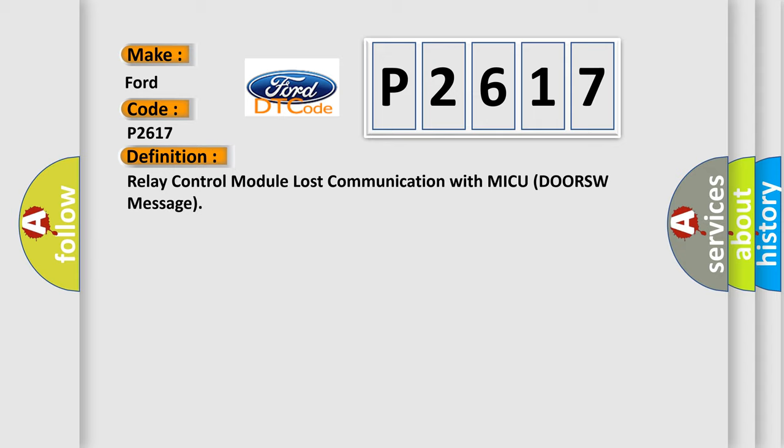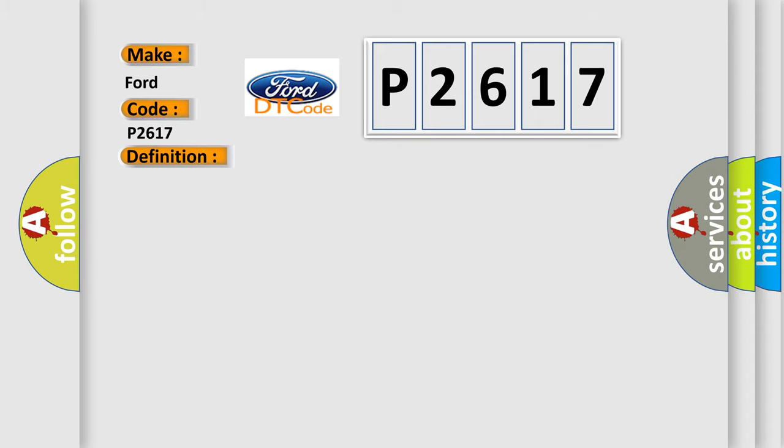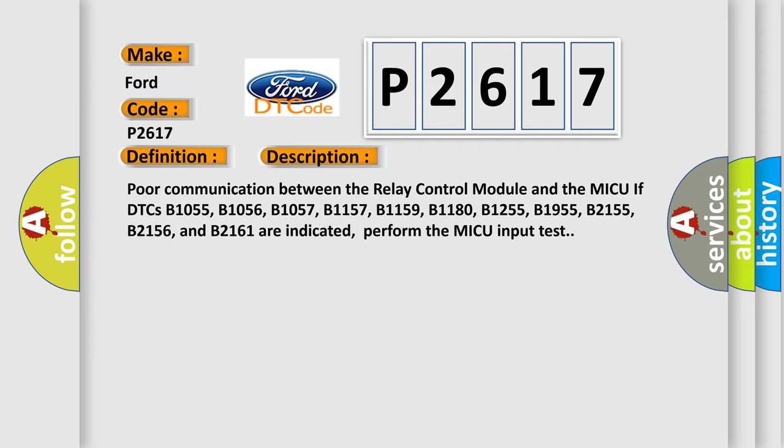The basic definition is: Relay control module lost communication with MICU DORSW message. Here is a short description of this DTC code: poor communication between the relay control module and the MICU, if DTCs B1055, B1056, B1057, B1157, B1159, B1180, B1255, B1955, B2155, B2156, and B2161 are indicated. Perform the MICU input test.